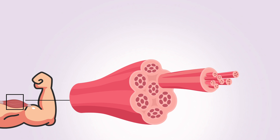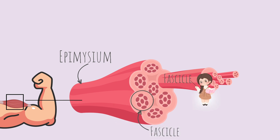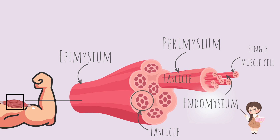The most outer layer of connective tissue is the epimysium. The epimysium covers the entire muscle. Muscles are formed by multiple bundles called fascicles. Each fascicle is covered with a connective tissue called perimysium. Fascicles are made of multiple muscle cells, also called muscle fibers. Each muscle cell or fiber is covered with a connective tissue called endomysium.